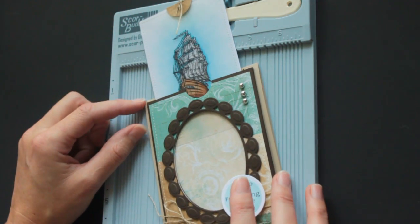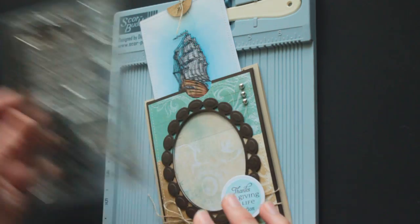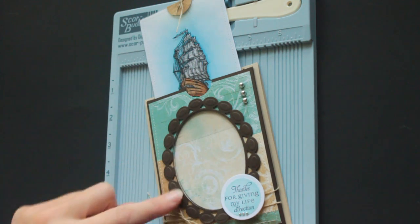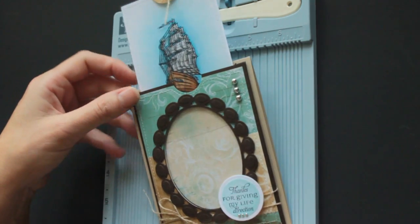The stamps in the sample are from Flourishes, and it's called the Guiding Light stamp. The paper is Bo Bunny, the frame and the circle were cut with Spellbinder dies.